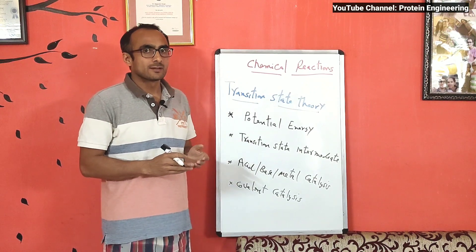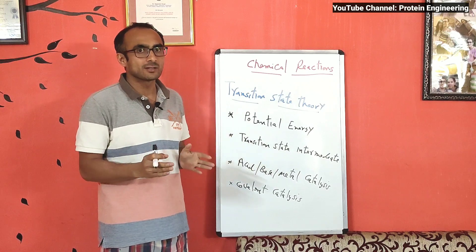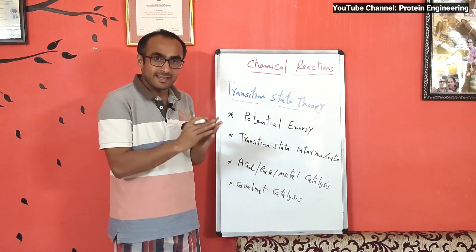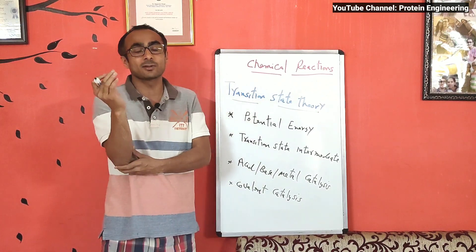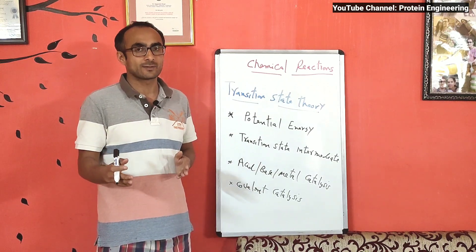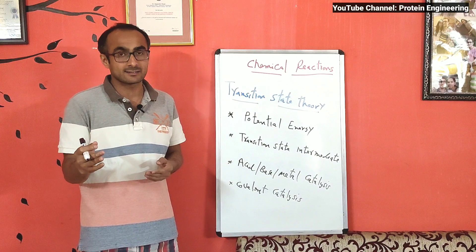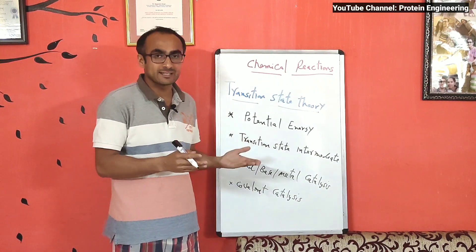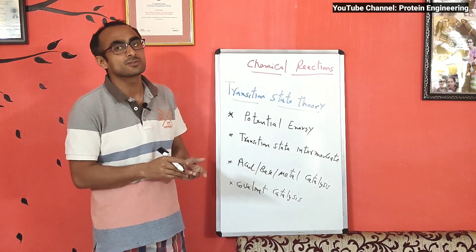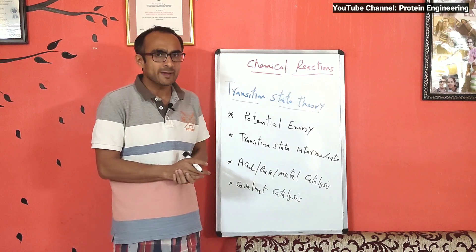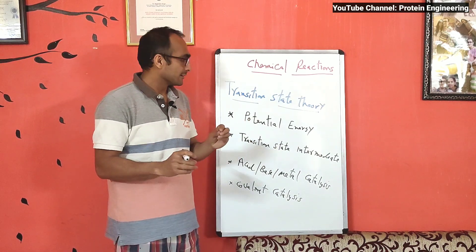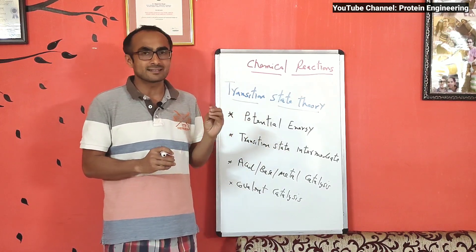For a chemical reaction to proceed, the reactant chemical should have sufficient energy to overcome the potential energy barrier — what we call activation energy. As per transition state theory, every chemical reaction goes through an unstable transition state intermediate. When this intermediate splits down, it gives rise to energy, so the splitting is favorable and that is how the reactant gets converted into product. There are different types of catalysis: acid-base catalysis, covalent catalysis, and metal ion catalysis. The function of any catalyst is to stabilize the transition state intermediate.